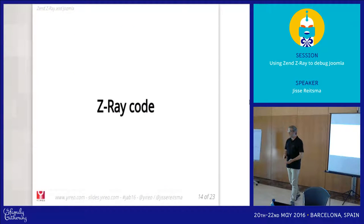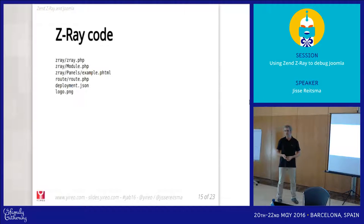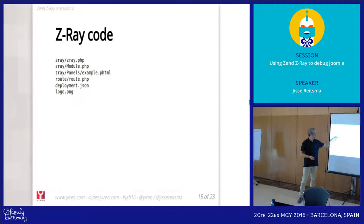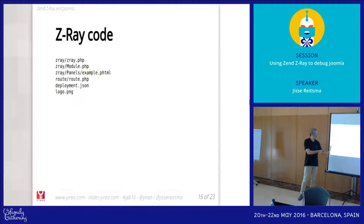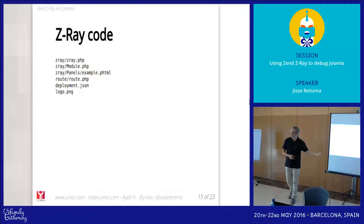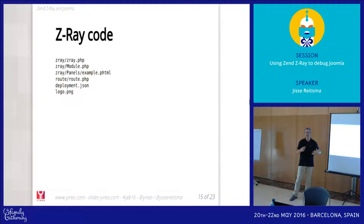Now let's dive into the code a little bit — it's a developer talk. A Z-Ray plugin has a couple of files identifying what the plugin is doing. There's a deployment.json file identifying that this is a plugin meant for Z-Ray, along with a logo, and mainly there's the Z-Ray.php file. If you don't have that file you don't have a Z-Ray plugin — every Z-Ray plugin has this entry file. My plugin only has this file, because that's all I needed.